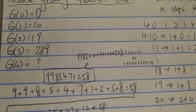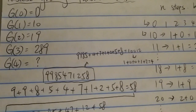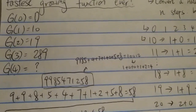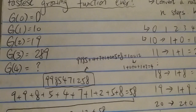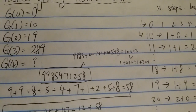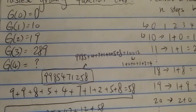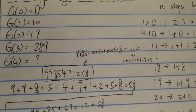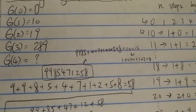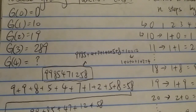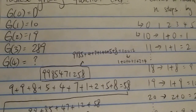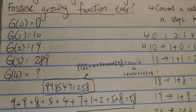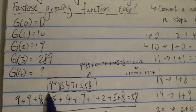g here doesn't stand for Graham's number — it just represents a function. So what do you think it is? You can try to pause the video and think about that before you continue. It's a pretty mind-blowing thing.